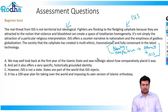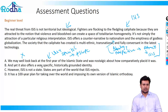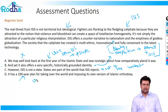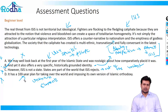Option A — 'we may well look back at the first year of Islamic State and wax nostalgic' — is very specific and doesn't match the overall scope, so it's gone. Option B — 'and yet it also offers a very specific, historically grounded identity' — could be an answer because it gives them a different perspective to join ISIS, going back to the passage. Option C, 'however ISIS is not a state,' is out of context. Option D mentions a hundred-year plan, an unknown element. Eliminating C, D, and A — B must be the answer as it goes back to the passage, giving a new perspective on why people join ISIS.